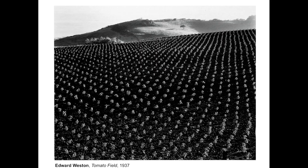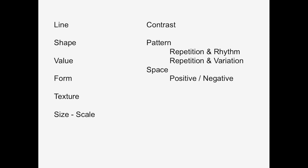Space is the feeling of depth or shallowness in a work of art. You can see the spaciousness in Edward Weston's photograph, where the repetition of the pattern of the tomatoes in the foreground leads us back into that background space. Even the use of a horizon line is an indication of depth in space. It would be a much different picture if he moved his viewfinder so that it did not include the horizon line — it would flatten out the picture.